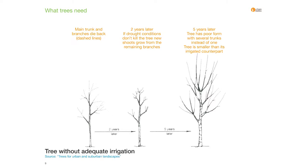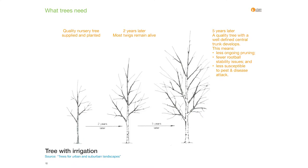Why is getting water to a tree so important? Without adequate irrigation, a newly planted tree will have dieback. Two years later, if it hasn't been killed completely, new shoots will grow from remaining branches, and five years after that we'll end up with a structurally poor tree with major ongoing maintenance and structural pruning issues. With irrigation the difference is substantial — supply a quality tree and two years later twigs remain alive and five years later you'll have a great tree with a central leader, meaning less ongoing pruning, fewer anchorage issues and less susceptibility to pest and disease attack.